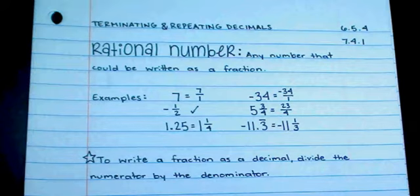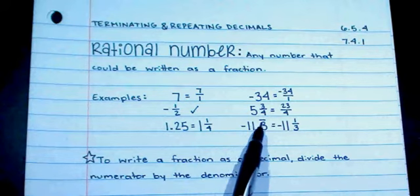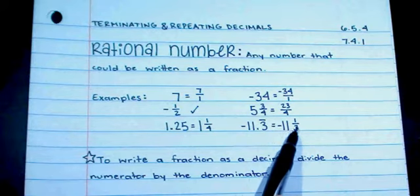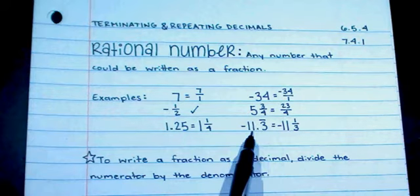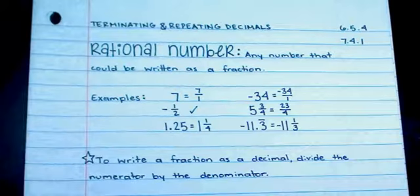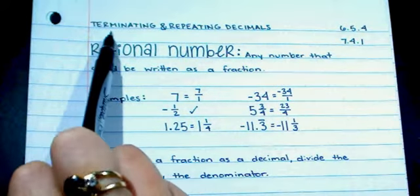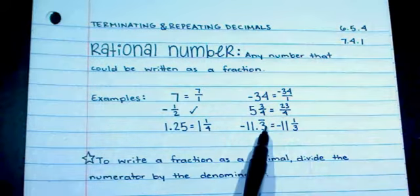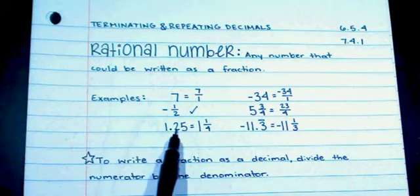For now, we're going to talk about numbers that can be expressed as a fraction. For the decimals I chose: 1 and 25 hundredths is 1 and 1 quarter, or 1 and 1 fourth. And negative 11 and 3 tenths repeating would be expressed as a fraction as negative 11 and 1 third. The bar notation indicates that it repeats — it would be negative 11.3333... forever. We need to look at how to write a fraction as a decimal and whether that decimal is going to be terminating or repeating. Terminating just means to end — the decimal ends and does not go on forever.